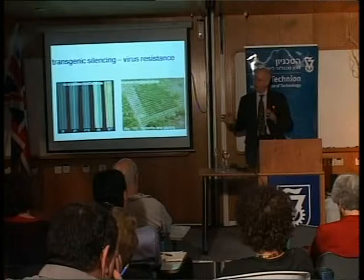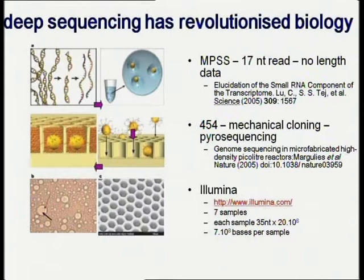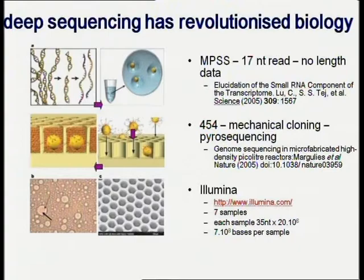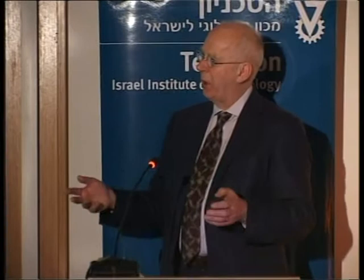I want to move on to where we are now in our thinking about RNA silencing in plants. A technology that has really revolutionized biology is next-generation sequencing. What it means is that if you're interested in a biological problem and want to know what is happening at the genetic level, you don't need to go in with any preconceptions—you basically sequence what is there. So if you're interested in small RNA, you can ask: what does small RNA do in plants? Does it only do virus resistance, or does it do something else? You isolate small RNA from plants, feed it into next-generation sequencing technology, and see what you get.